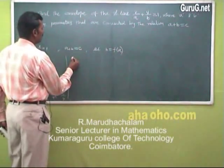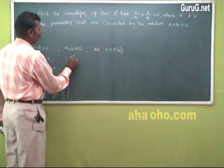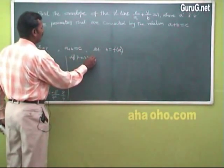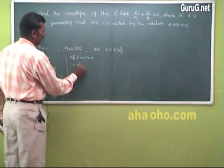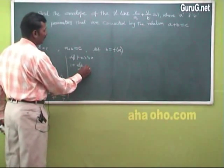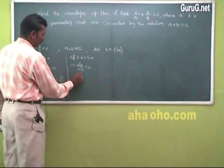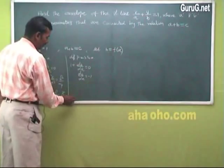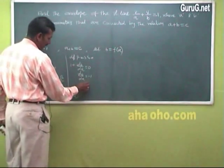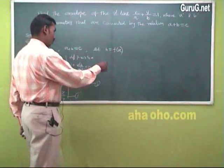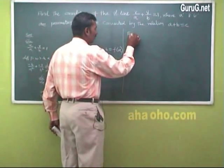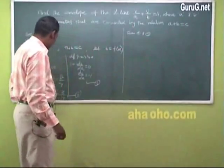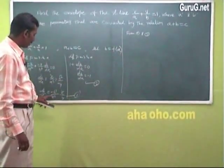From a + b = c, differentiate partially with respect to a: 1 + db/da = 0, so db/da = minus 1. Call this equation 2. From equations 1 and 2, the left-hand sides are equal, so right-hand sides are equal.